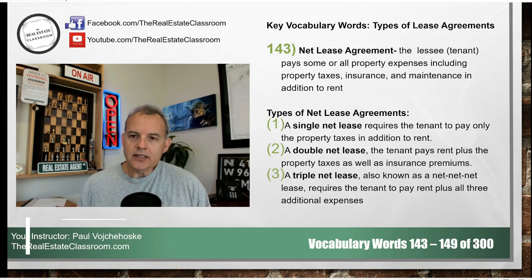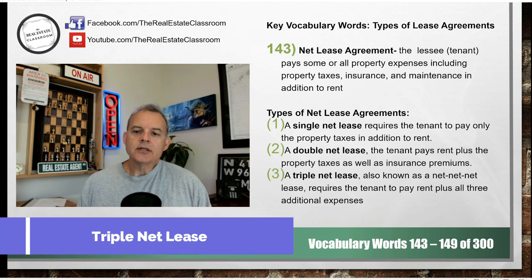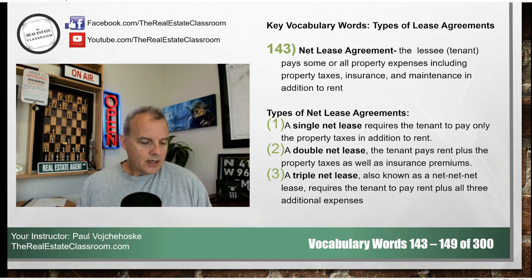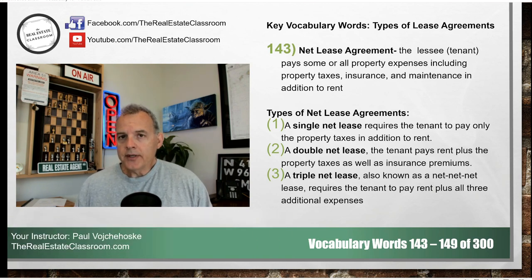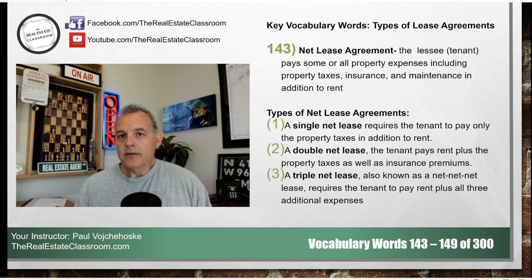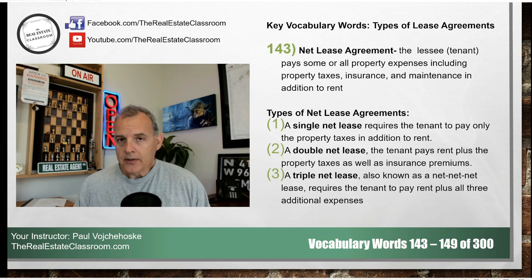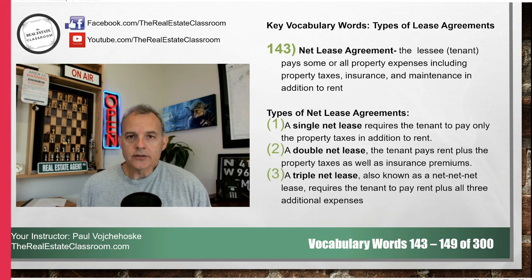A triple net lease is where the tenant pays the insurance premiums, the property taxes, and property maintenance, in addition to that monthly or periodic rent.